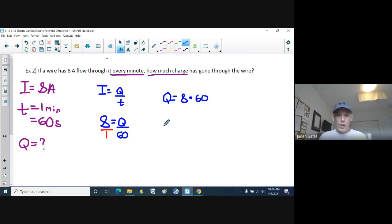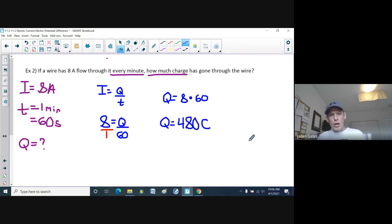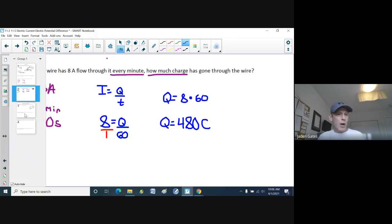Hopefully that should be 240. Let me see here. Eight times 60 is 480. So eight times 60, we get 480. And our charge is in coulombs. So again, current is how many charges per second go through that wire.